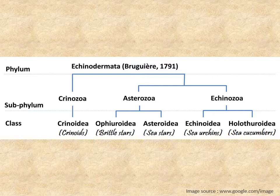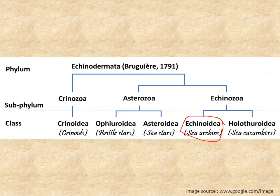In our undergraduate syllabus, among these five classes we have to study in detail the class Echinoidea. Up to this we have learned the common characters and features which are common in all the Echinodermata phylum. Now we are going to study in detail the morphology and other things of the class Echinoidea.